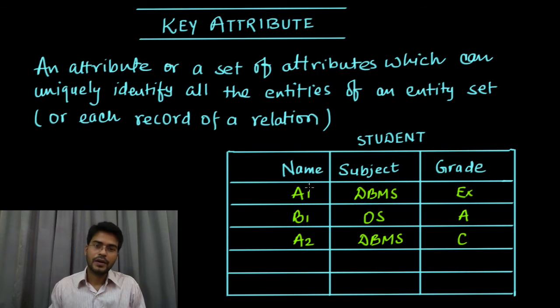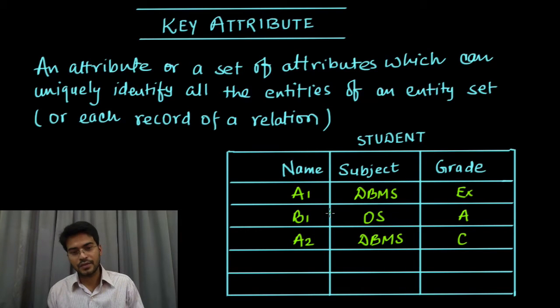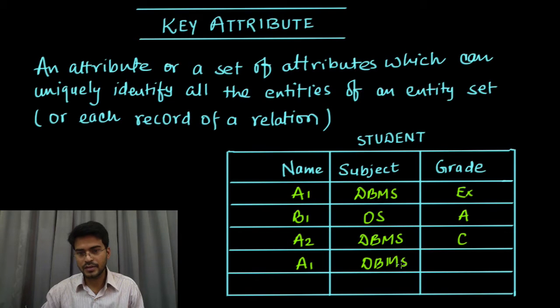For now, by name I can identify each record uniquely, but this is not the case which always happens. Like in a class, there may be two students having same name. I am considering the case. Let's say student A1, there are two students with name A1 and they have subject DBMS and the grade is B.